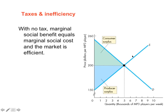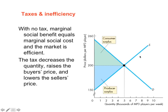The producer surplus is the area below the equilibrium price and above the supply function. The supply function measures the minimum cost of producing the good, or the minimum price at which the supplier is willing to supply the good. If a supplier is willing to supply the good at $151 but actually gets a price of $200 in the market, this extra surplus he gets is the producer surplus.